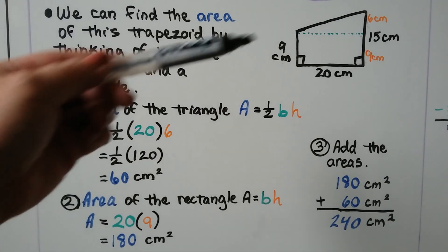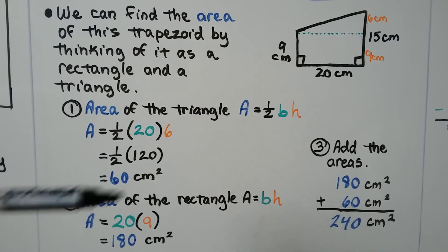And now we just do the rectangle. We do 9 times 20, or 20 times 9. We get 180. When we add the two areas together, we get 240 centimeters squared. So we can split this into a triangle and a rectangle.